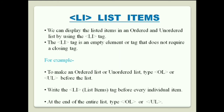Before explaining OL and UL, you should know about the LI tag, that is the list items tag. We can display listed items in an ordered and unordered list by using the LI tag. The LI tag is an empty element, meaning it does not require a closing tag. To make an ordered or unordered list, type OL or UL for the list, write the LI tag before every individual item, and at the end close with slash OL or slash UL, because both are container tags.